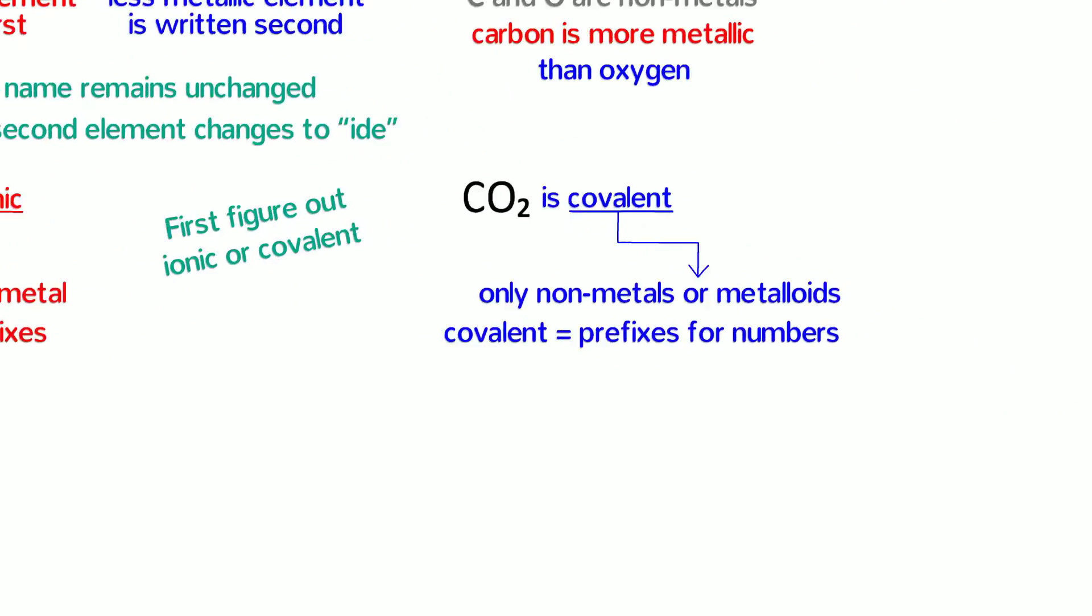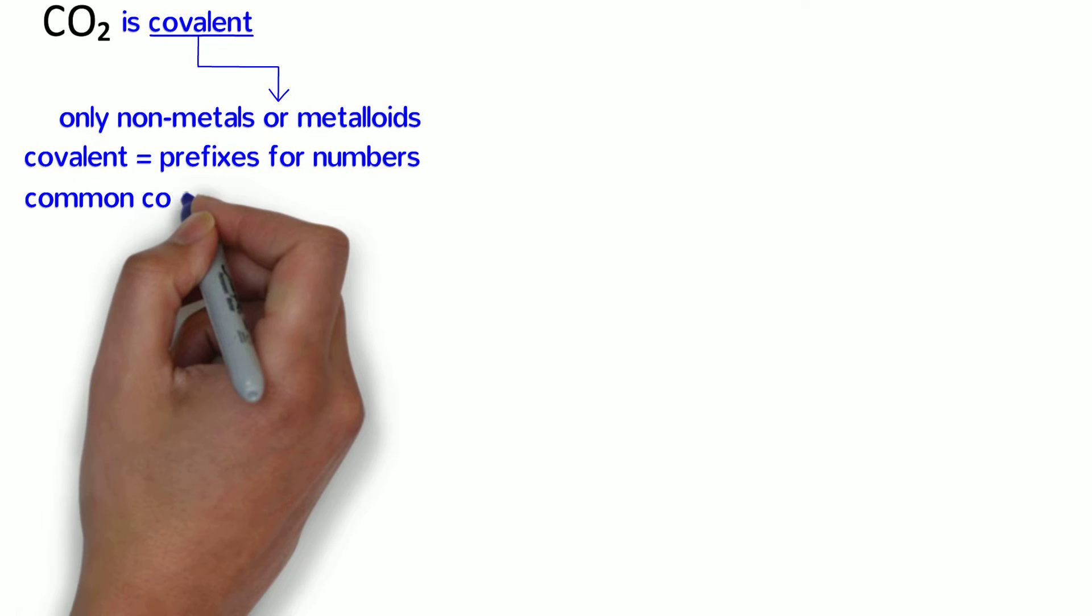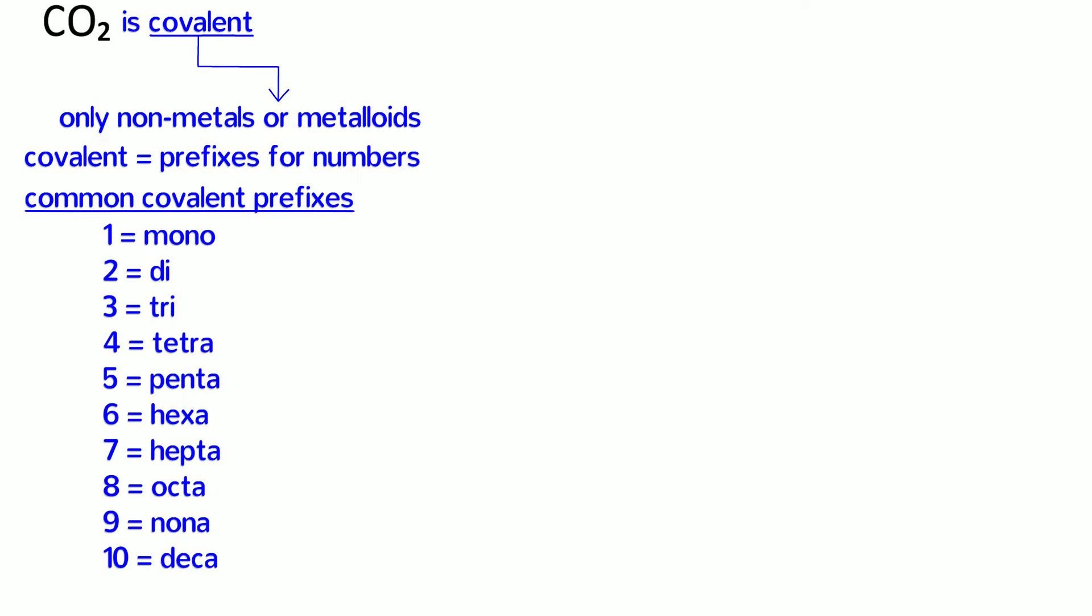Let's focus on covalent compounds for a minute. The most common prefixes for covalent compounds are written here: 1 equals mono, 2 equals di, 3 equals tri, 4 equals tetra, 5 equals penta, 6 equals hexa, 7 equals hepta, 8 equals octa, 9 equals nona, 10 equals deca. If they're unfamiliar to you, you should memorize them.